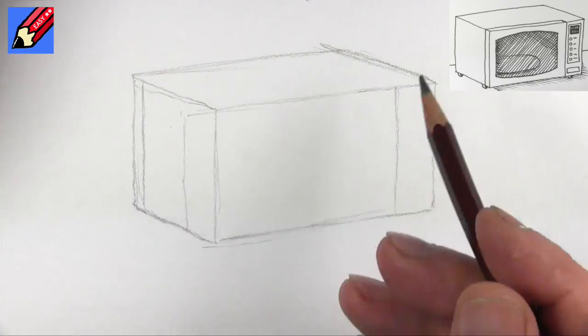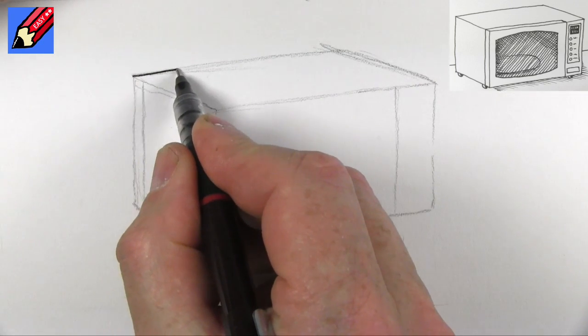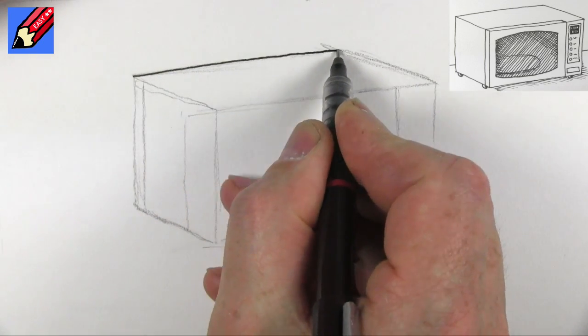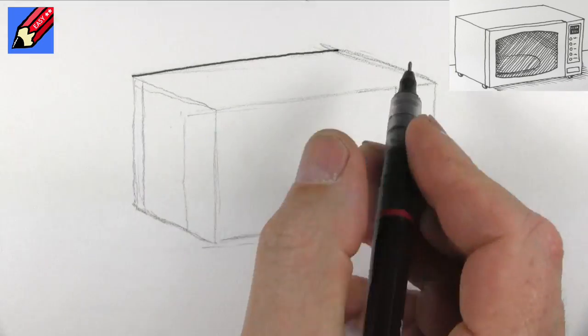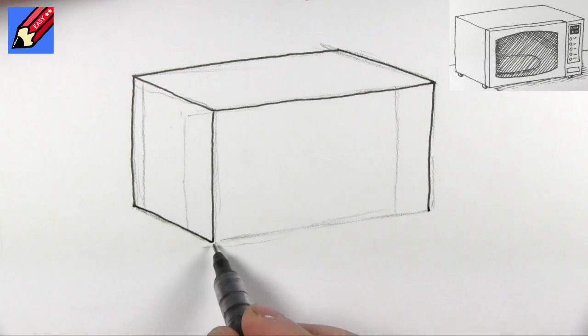The top of this microwave is also a rectangle that's been squashed that way. Now I'm just going to ink in the box. While I'm doing that, why not click the subscribe button and keep coming back to Draw Stuff Real Easy every week for lots more drawing.